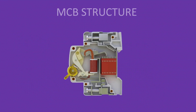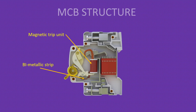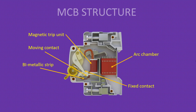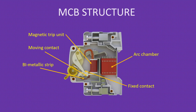If you look at the MCB structure, it has a bimetallic strip and a magnetic trip unit. The magnetic trip unit consists of a coil and a piston arrangement. Then it has a fixed contact, moving contact, and an arc chamber. The arc chamber is used to quench the arc due to sudden switching or sudden interruption of current. If you turn off the current suddenly, there will be a spark or arc due to ionization of air. The arc chamber has different small chambers, so the arc is forced to pass through them and loses strength until it is extinguished.